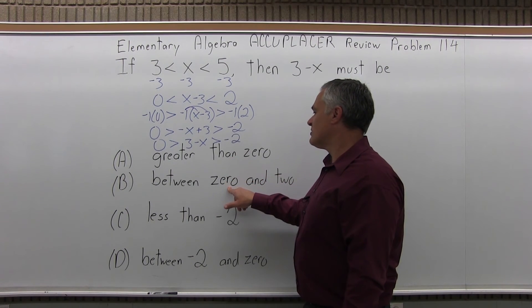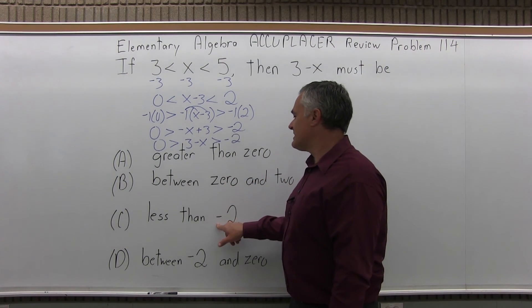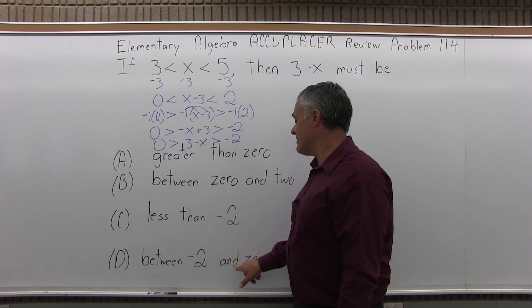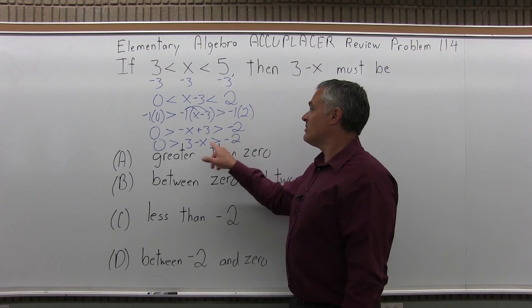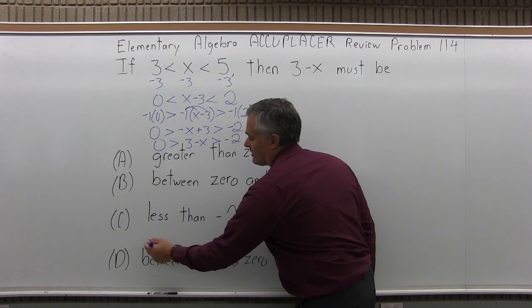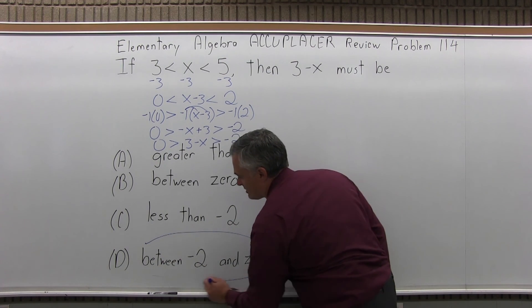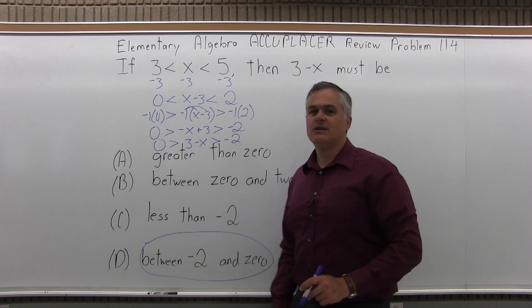So greater than 0 is out. Between 0 and 2 is out. Less than negative 2, it's not. Between negative 2 and 0. Between negative 2 and 0. That's what I came up with. So the answer is option D.